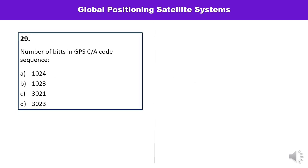Question number twenty-nine: The number of bits in GPS C/A code sequences — 1024, 1023, 3021, or 3023? The number of bits required is 1023, so the answer is B.